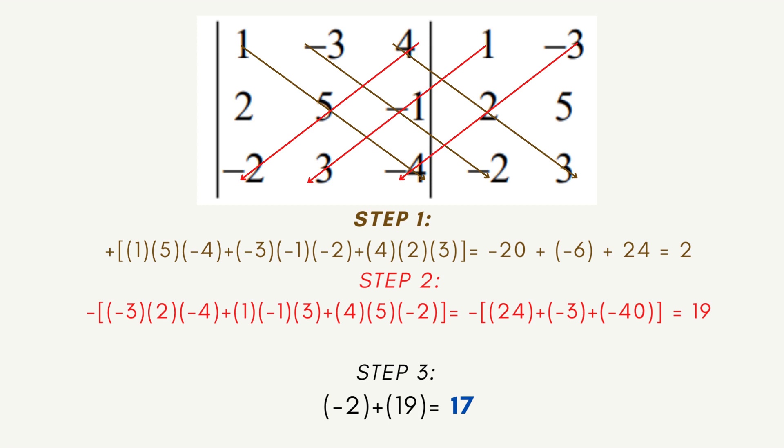For step 2, we will take the negative of the sum of the diagonal products going from right to left, shown in the red colored arrow. We have negative 3 times positive 2 times negative 4 plus 1 times negative 1 times positive 3 plus 4 times positive 5 times negative 2. That will give us a sum of positive 19.